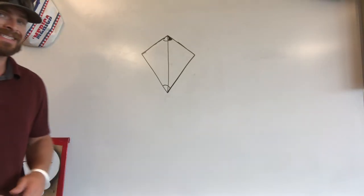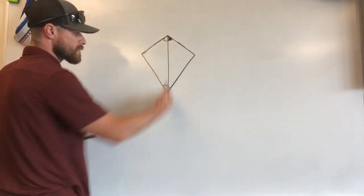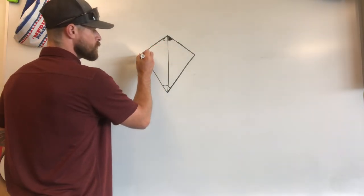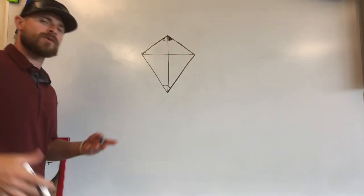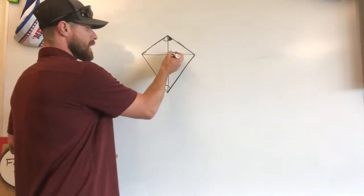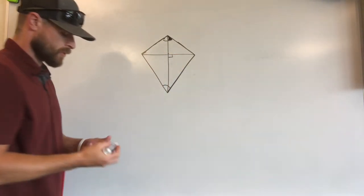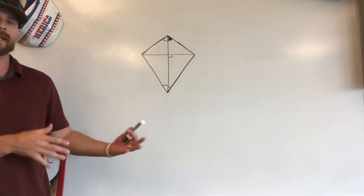The kite diagonal theorem states that when we draw two diagonals of the kite, so we've got our first diagonal already drawn here going through the vertex angles, and then our two non-vertex angles, we're going to draw a diagonal going across that way. What this is going to form is perpendicular angles here in the center. We're going to have 90 degrees here, here, here, and here. We now have perpendicular lines creating 90 degree angles.